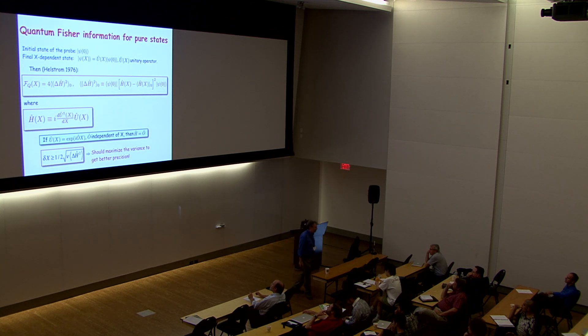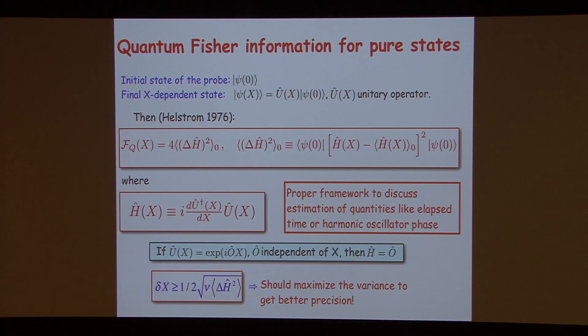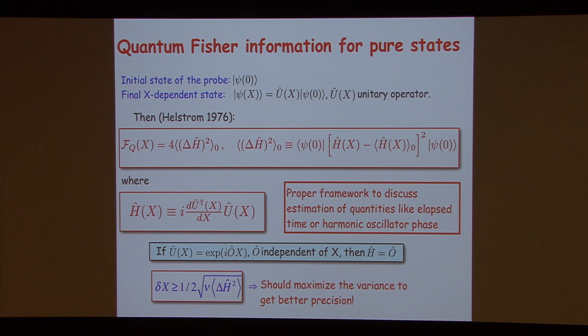This is the proper framework to discuss estimation of quantities like elapsed time or harmonic oscillator phase — these are treated here as parameters. The uncertainty relation we had before is really a Cramér-Rao relation, which limits the error you can make in estimating the parameter. If you want to estimate a displacement, the transformation involves the momentum operator, and the quantum Fisher information is four times the variance of the momentum.